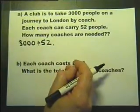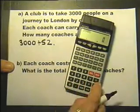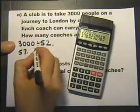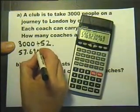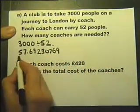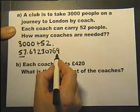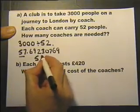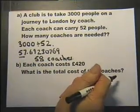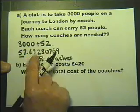Now if this was a calculator paper, let's see what would happen. 3,000 divided by 52, and we get this in the calculator window, which in this particular question is actually a nonsense answer. It's saying that we need 57 and a bit of a coach. You can't do that—you can't order a bit of a coach. So you have to round it up and say 58 coaches altogether.